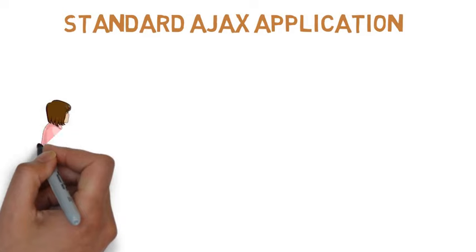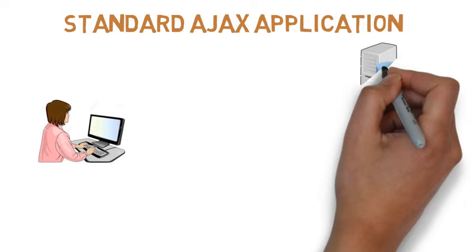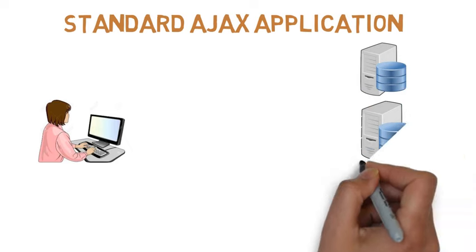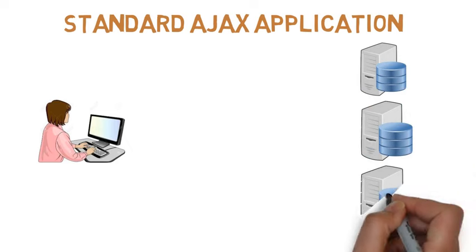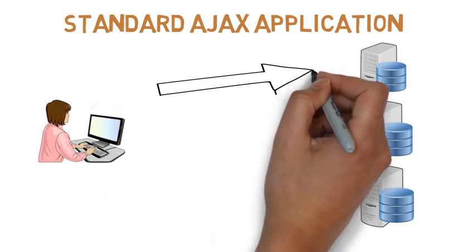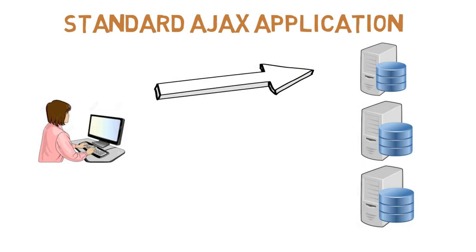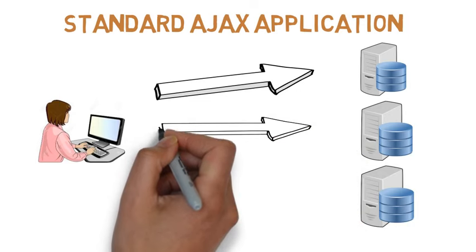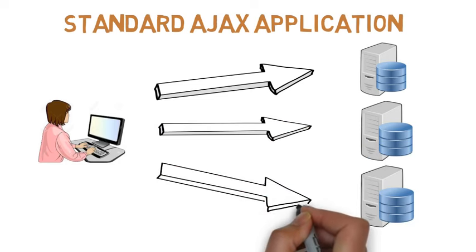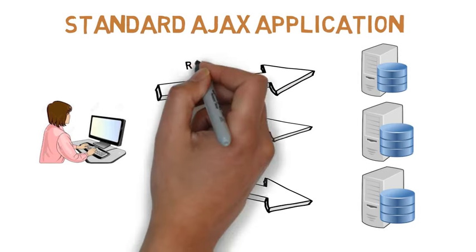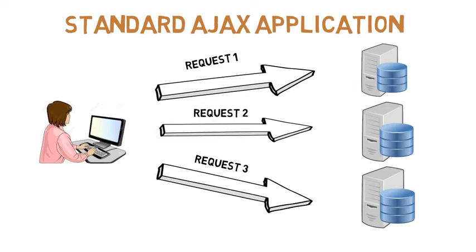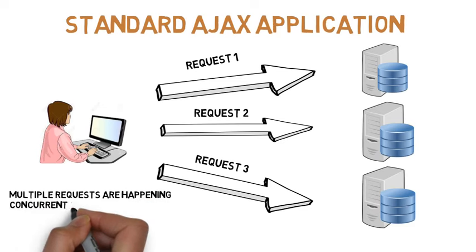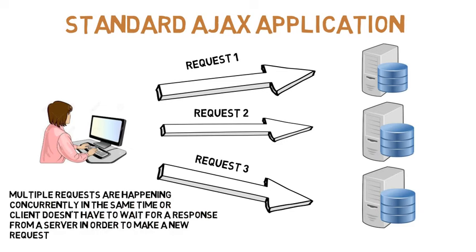We want Ajax to make our applications dynamic. In a standard Ajax application, we have a client that can make multiple requests to the server at the same time. As you can see in the animation, request 1, request 2, and request 3 happen concurrently — the client doesn't have to wait for a response before making a new request. This is the major advantage of Ajax.